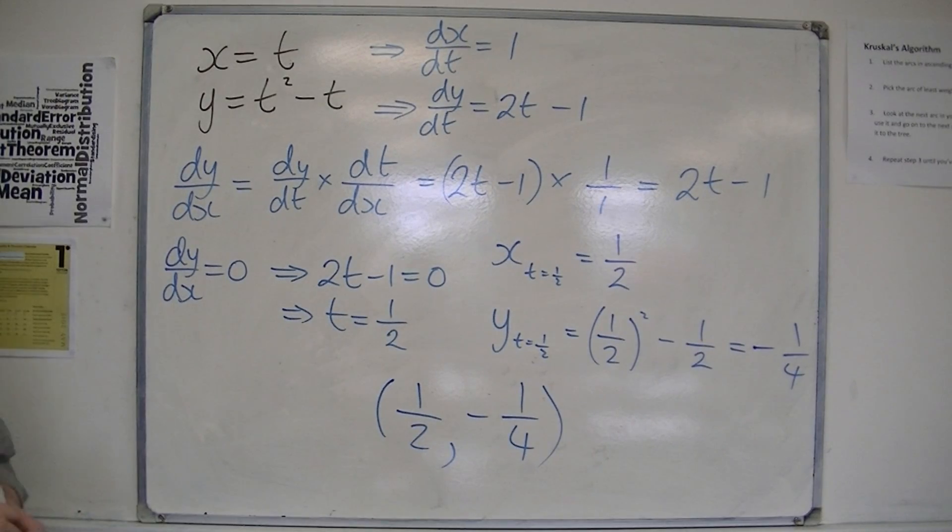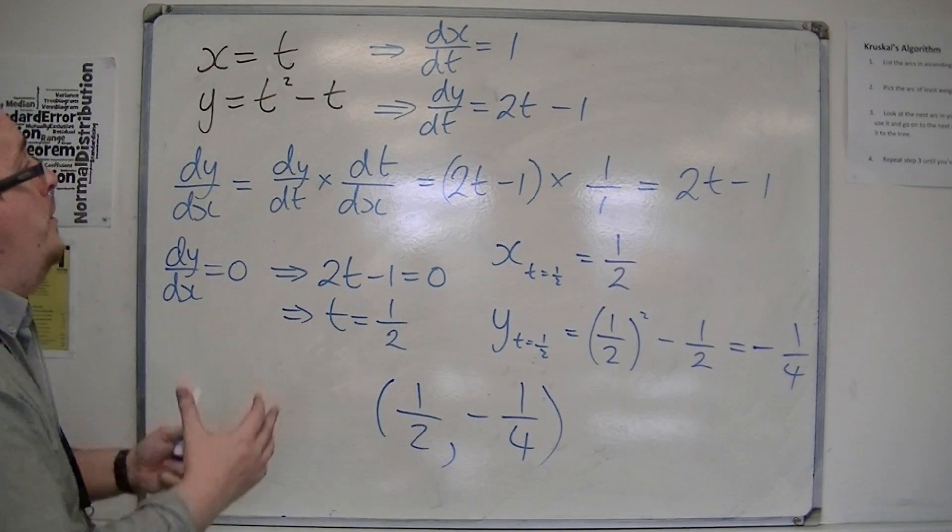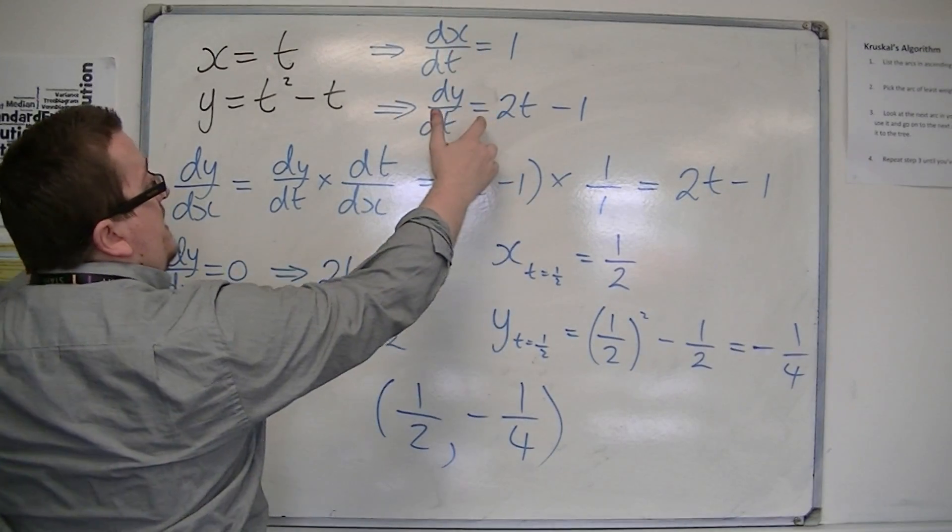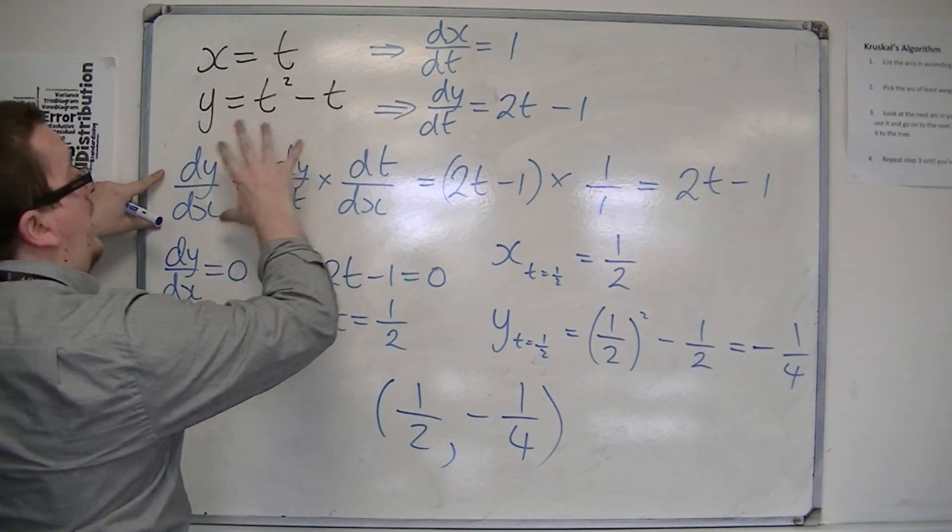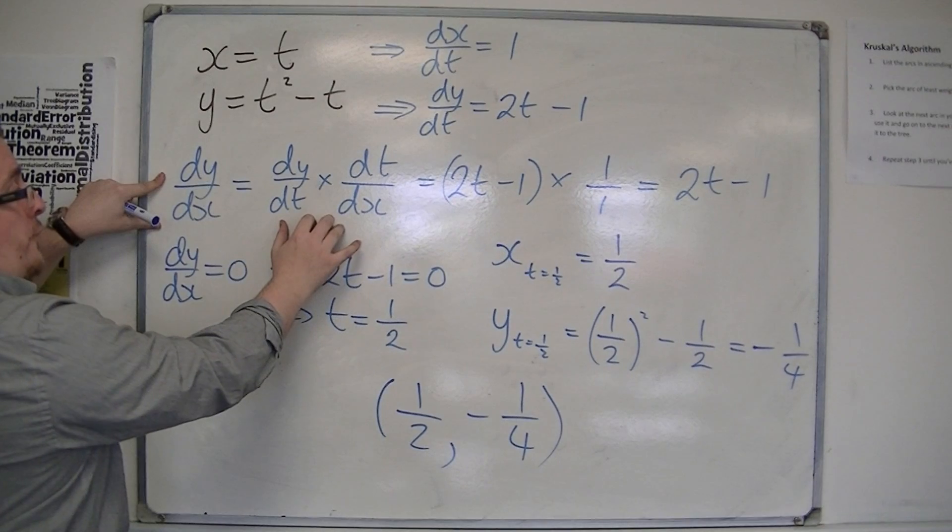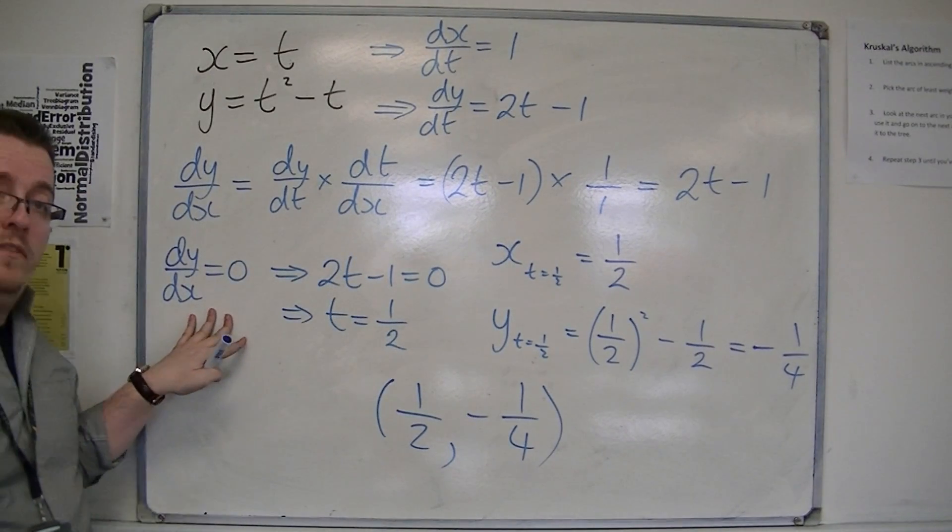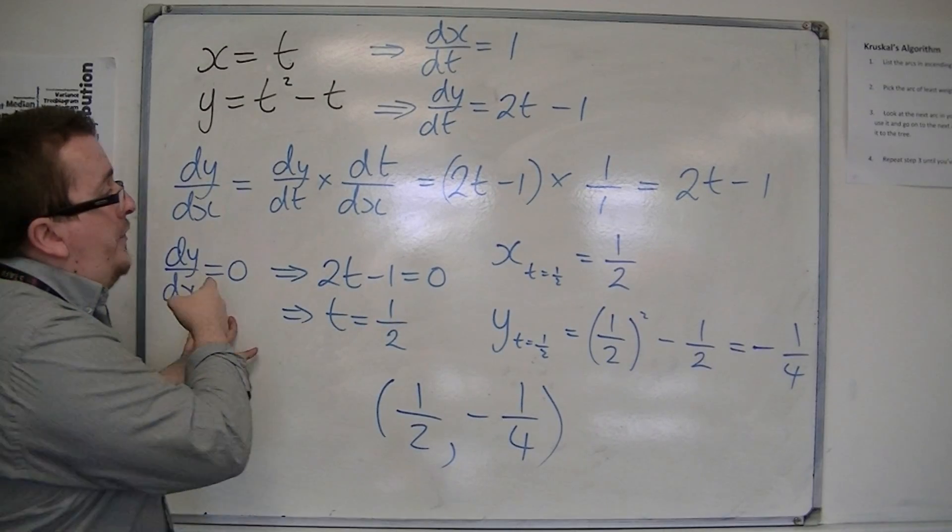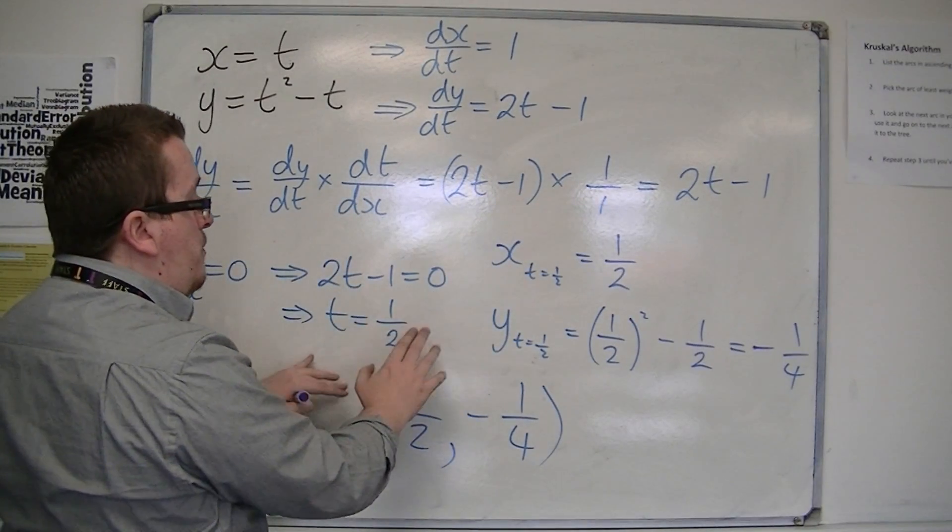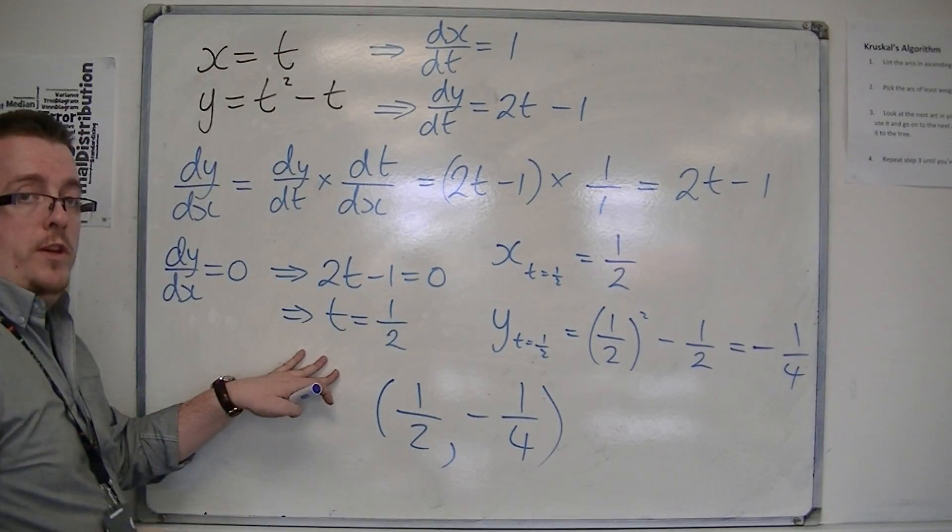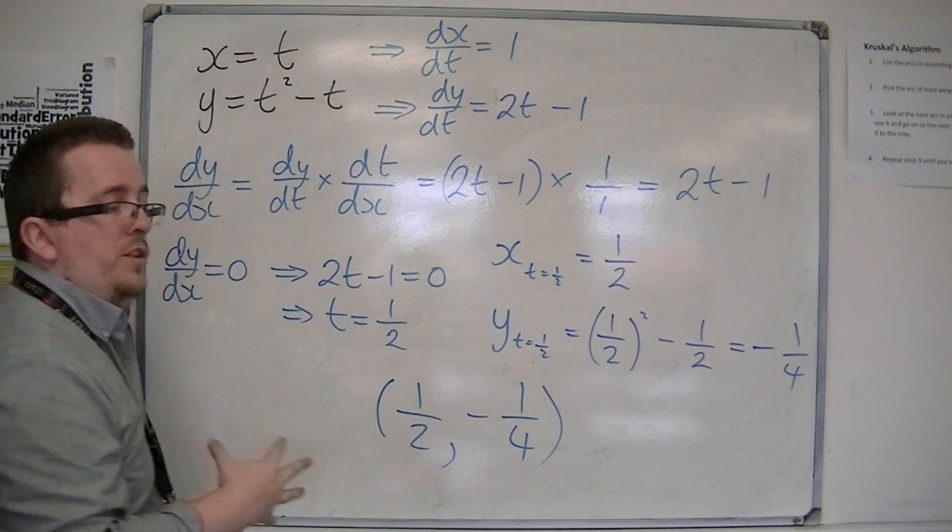So the steps we went through to determine the stationary points: we found dy/dx using dx/dt and dy/dt. To find the stationary points, you put the derivative equal to 0. We solved 2t minus 1 equals 0 to find t equals 1/2, and then substituted that back into the original two equations to get the coordinates.